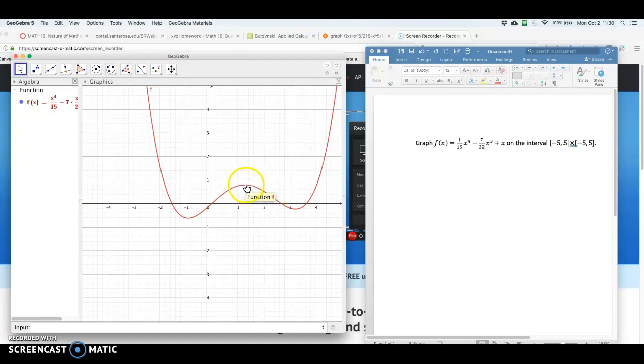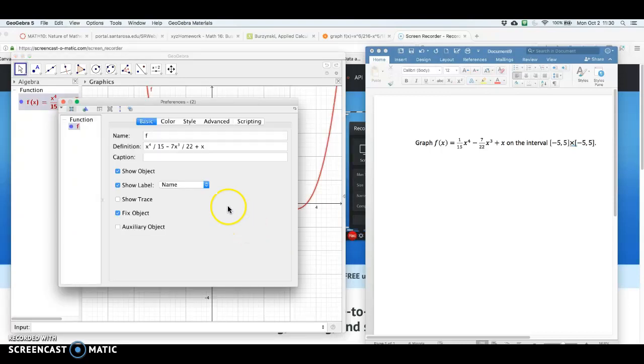Other options, this graph, if I click, highlight my mouse over the graph and right click, notice it says function now instead of graphics. I could click on object properties.